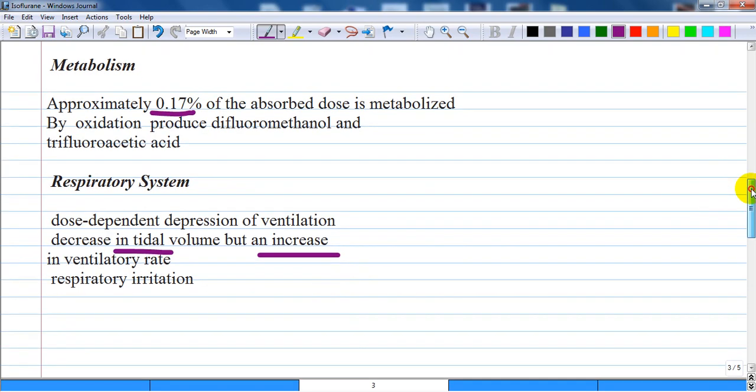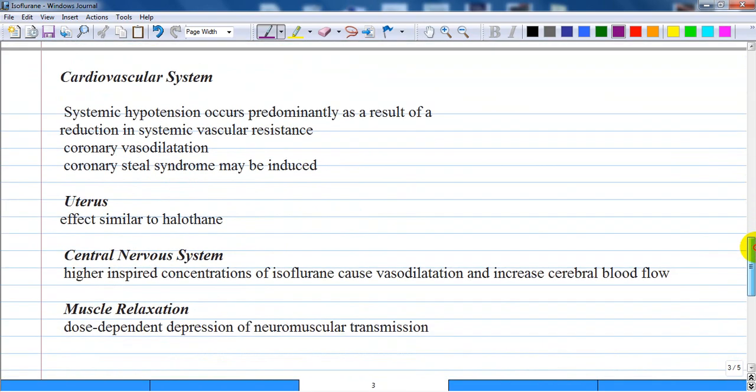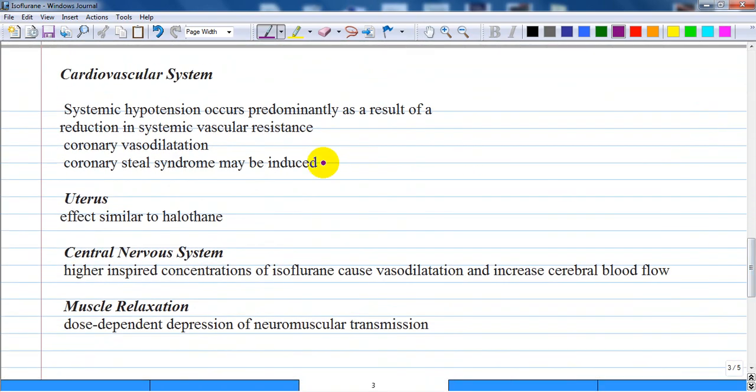Cardiovascular system: Systemic hypotension occurs predominantly as a result of reduction in systemic vascular resistance. Arrhythmias are uncommon. But in addition to dilating systemic arterial vessels, isoflurane causes coronary vasodilation.